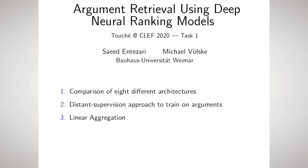We apply eight different neural ranking architectures to the conversational argument retrieval task and compare their effectiveness. In order to train these networks on the args.me data, we pursue a distant supervision approach based on the related problem of retrieving relevant premises given a claim. In an attempt to combine the insights from various neural rankers, we attempt a simple linear aggregation scheme.